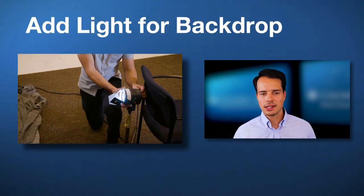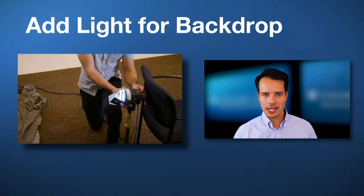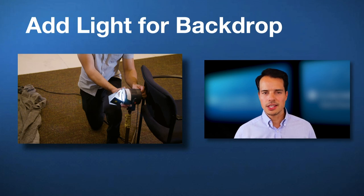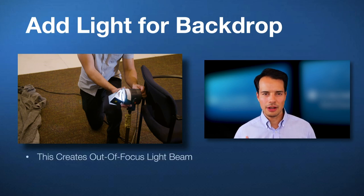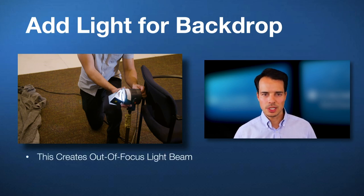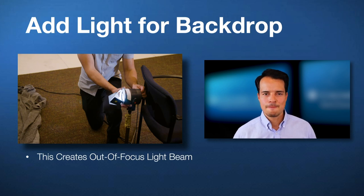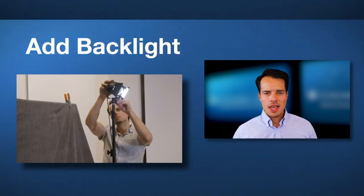After that, we add in a light for the backdrop. In this case, we are hiding our light behind the chair so you won't see it. It's sort of an out-of-focus light beam that adds some texture to the background and makes the shot look a little bit more interesting.